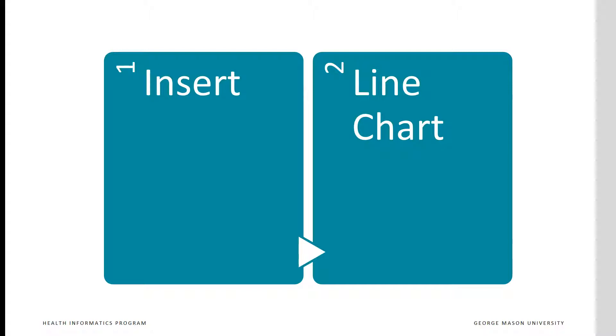Now we can select insert and select the line chart and highlight the upper and lower control limit columns of data as well as the observer values.